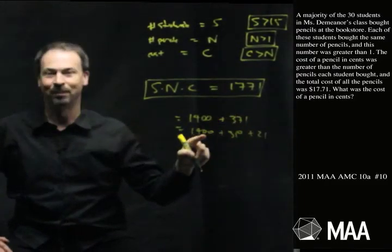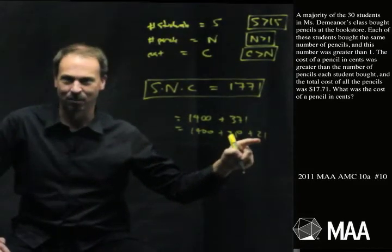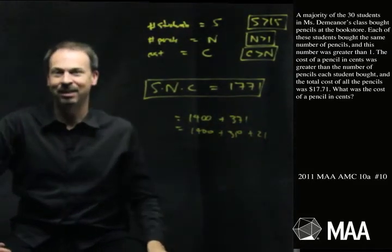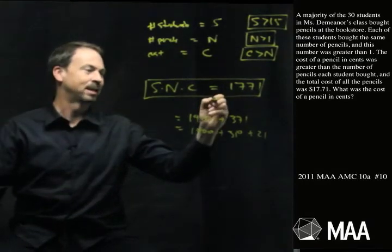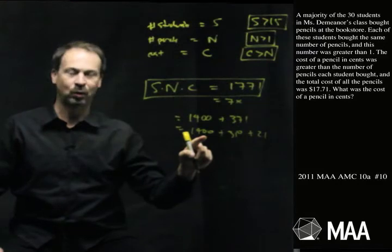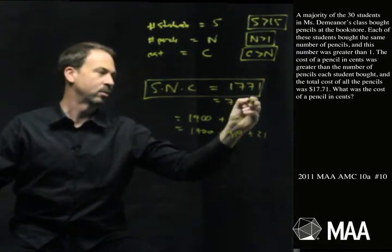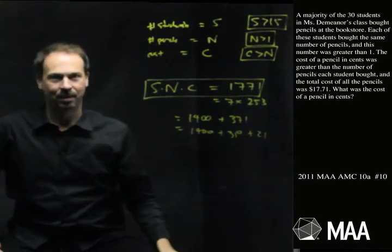Oh! 1400 is a multiple of 7. 350 is a multiple of 7. 21 is a multiple of 7. Yes. 1771 is a multiple of 7. It equals 7 times something. Times what? That's 7 times 200, 7 times 50, 7 times 3. I guess that's 253. Alright. Does 253 factor? Oh dear.